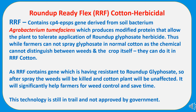The second biopesticide type is herbicidal, where the Bt gene is used. This is called Roundup Ready Flex (RRF) cotton. RRF contains the CP4 EPSPS gene derived from soil bacterium Agrobacterium tumefaciens, which produces a modified protein allowing the plant to tolerate application of Roundup glyphosate herbicide. Normally, farmers cannot spray glyphosate on crops as it cannot distinguish between weeds and the crop. In RRF cotton, farmers can spray glyphosate since the gene confers resistance, so weeds are killed while the cotton plants survive. This technology significantly helps farmers for weed control but is still in trial and not yet approved by the government.